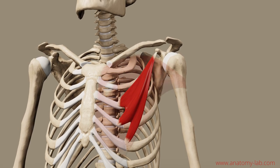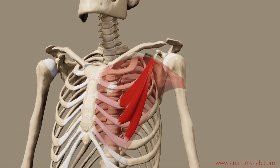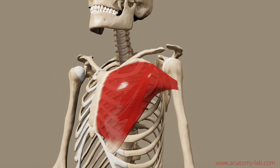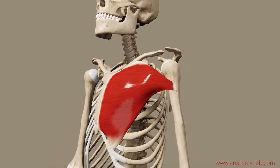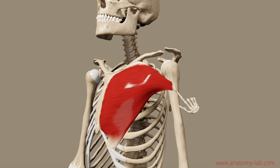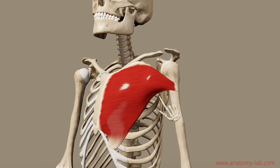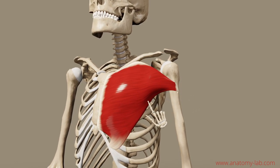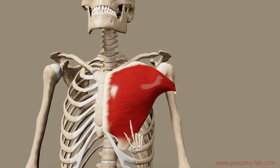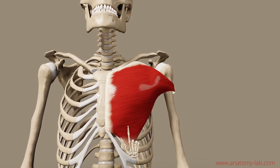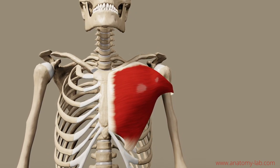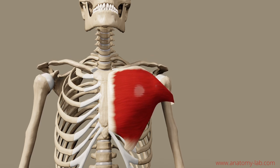Let's move on to the last muscle of today's session, the pectoralis major. You can see how it inserts on the outer side of the upper arm and how its fibers flow down to the ribcage and the sternum. Just like the trapezius, the pectoralis major is subdivided into three parts.